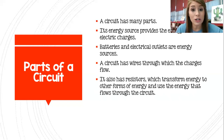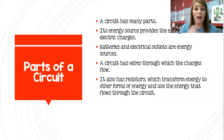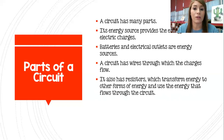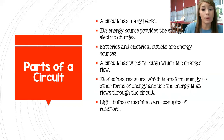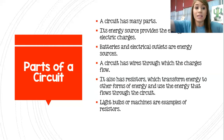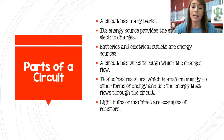It also has resistors, which are the things that transform the energy coming through the wire — the electrical energy — into different forms of energy, and they also use that energy that flows through the circuit. So if I turn a lamp on, a lamp would be a resistor; a light bulb would be a resistor. Any machine that you plug in, like this pencil sharpener, would be a resistor because it's using that energy. A TV would be a resistor because it is using that electrical energy and transforming it into sound energy and light energy.